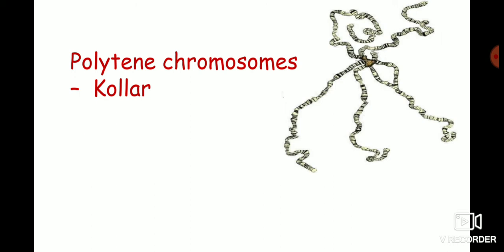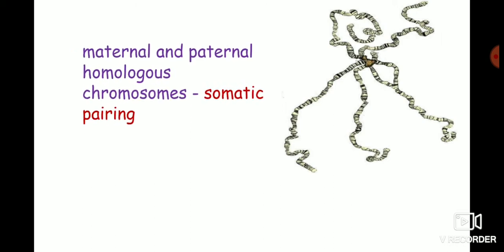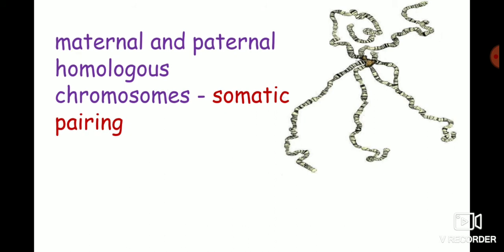The development of giant cells is accompanied by successive rounds of replication. Another peculiar characteristic of polytene chromosomes is that the maternal and paternal homologous chromosomes remain associated side by side. This phenomenon is called somatic pairing.